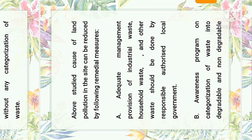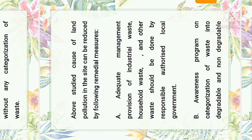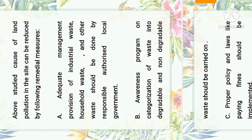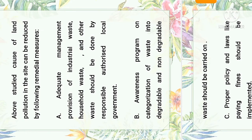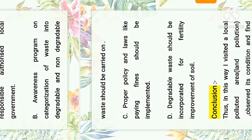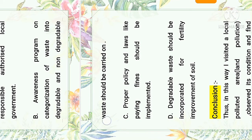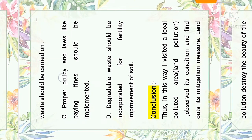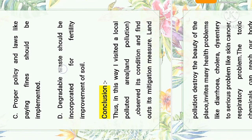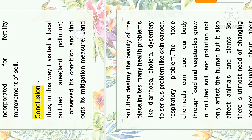After studying the cause of land pollution, the site can be improved by the following remedial measures: adequate management and provision for industrial waste, household waste, and other waste should be done by the responsible authorized local government. Awareness programs on categorization of waste into degradable and non-degradable waste should be carried out. Proper policies and laws, like paying fines, should be implemented. Degradable waste should be incorporated for fertility improvement of soil.